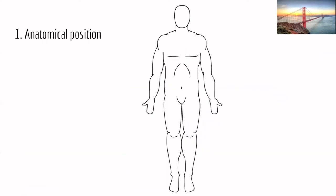Let's introduce the anatomical position. This is the universal position that people refer to in the medical field because it provides a standard for all professionals to describe anatomical relationships between different structures. The person is standing up — not sitting or lying down. The feet are slightly apart, the head is looking forward, the palms are facing forward, and the toes are also pointing forward. That's the standard anatomical position.